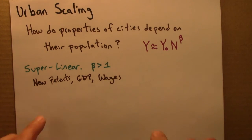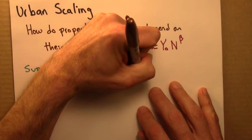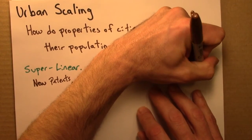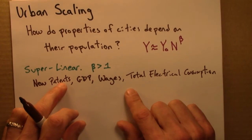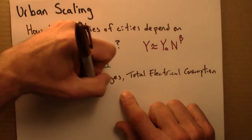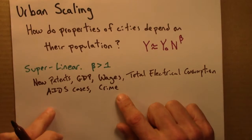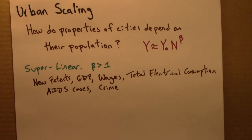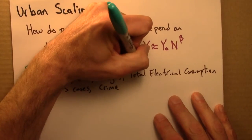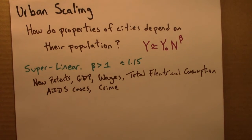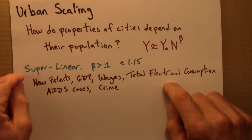But it's not all good news. Some things that we tend to think of as bad, like total electrical consumption, also go up faster than linear. AIDS cases, crime — all of these things tend to scale with an exponent larger than 1. It turns out many of these exponents tend to be around 1.15, though there is a lot of spread around that value.